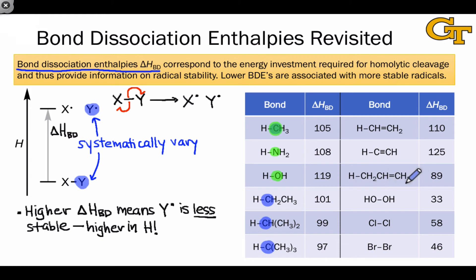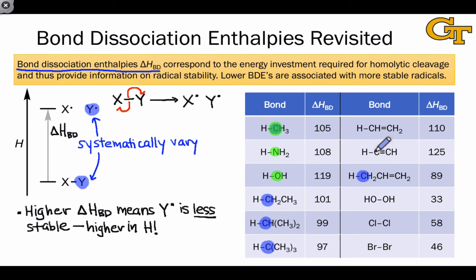Focusing on propene, we can also see the influence of resonance on radical stability. The BDE of this C–H bond, which gives rise to a resonance-stabilized radical, is significantly lower than the BDE of, for example, ethane. The lower BDE reflects resonance stabilization of the radical product of homolytic cleavage. Finally, we can also see the influence of the hybridization of the orbital bearing radical character: as we go from an sp radical to an sp² to a pure 2p radical, we get significant stability.